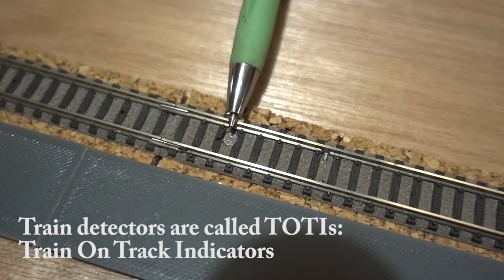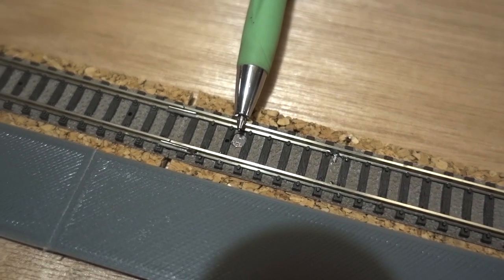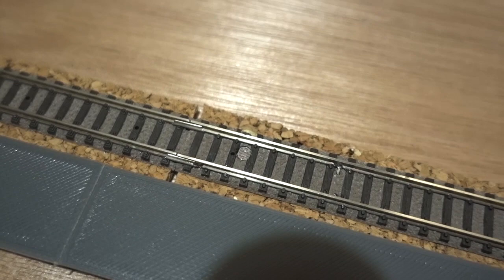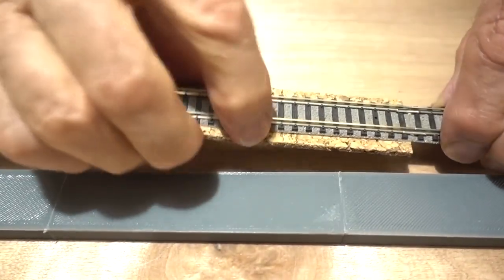When the train arrives, the room light is obscured. I'll show you the train detector PCB, which is under the track.